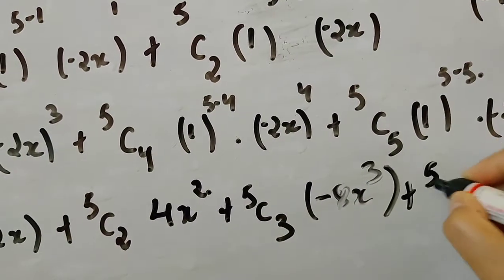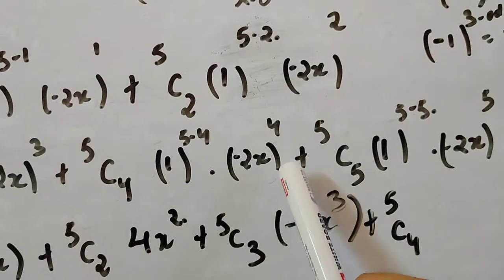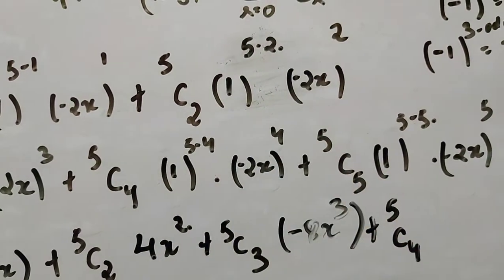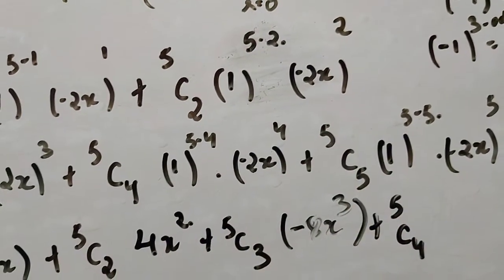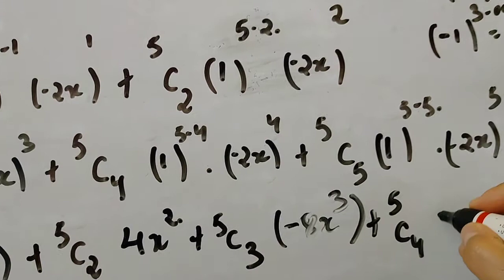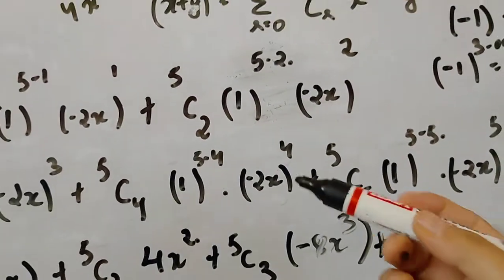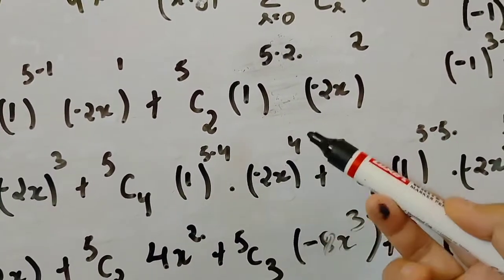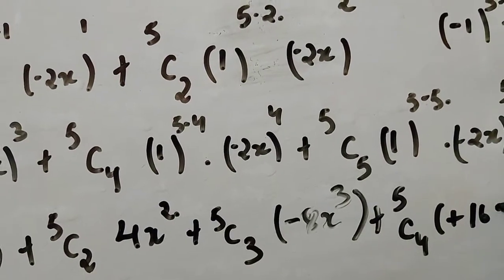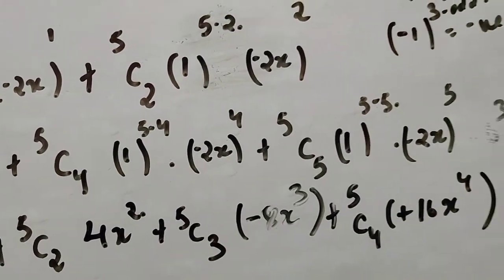For 5C4 with minus 2x to the power 4, the power is even so the answer is positive: 16x to the power 4.